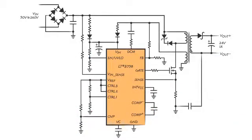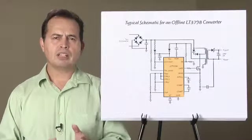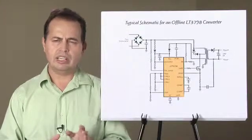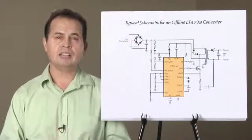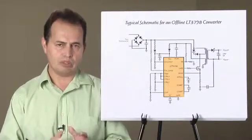The LT3798 requires no optocoupler. To regulate the output, it samples the auxiliary winding voltage on the primary side with a resistor divider and compares it to a fixed reference. The feedback includes an internal current source that helps compensate for output diode drops and needs to be accounted for when selecting the resistor divider.